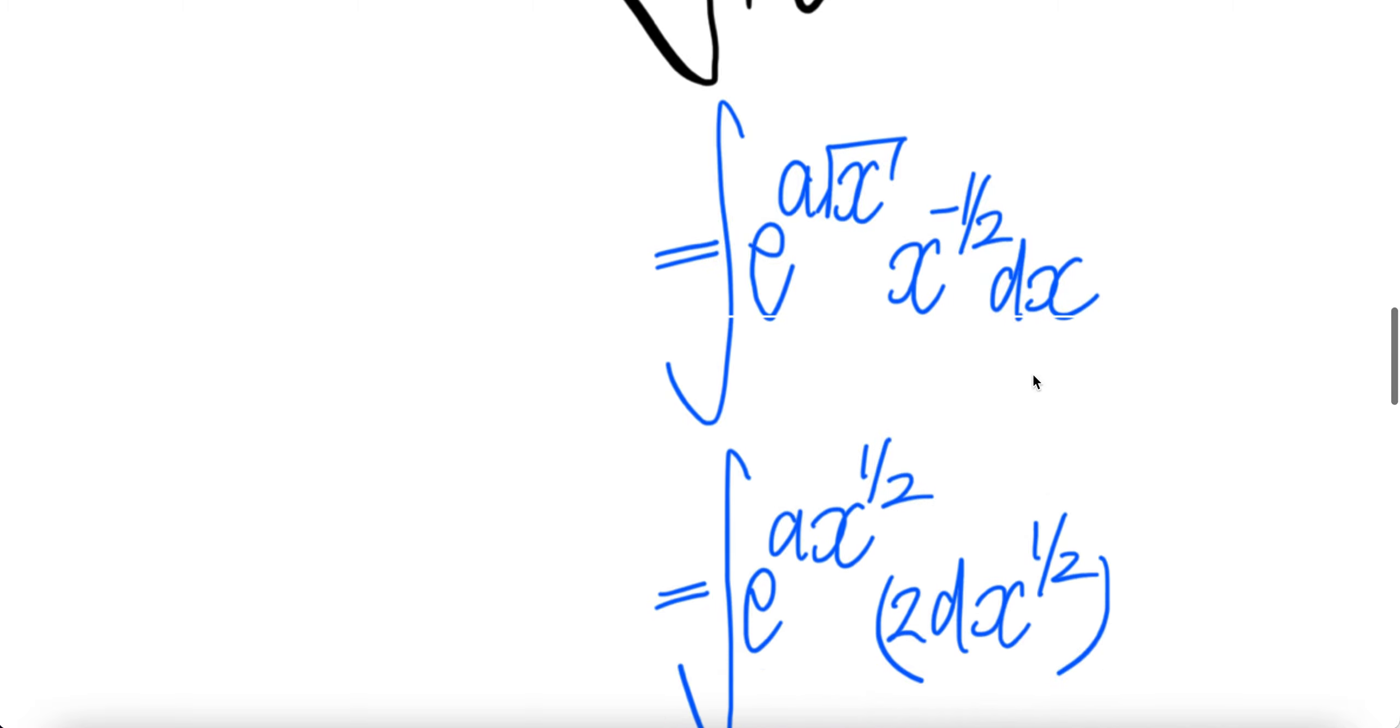Now we're going to push this into dx. The derivative of x to the power half is half comes down, cancel with 2, you get 1. And then half less 1 is x to the power of negative half dx.